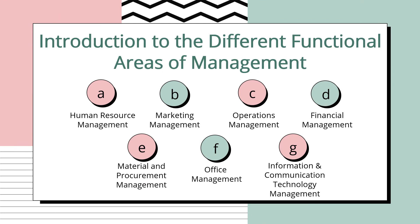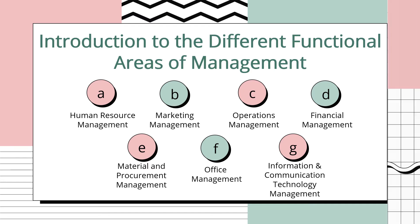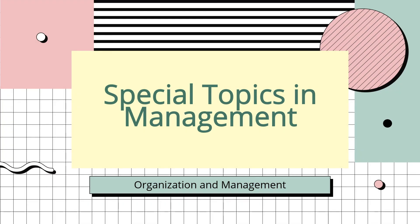Before we close Chapter 8, here are the different functional areas of management: human resource, marketing, operations, financial management, material and procurement, office management, and information and communication technology management. That concludes Chapter 8, and we have now finished all 8 chapters under Organization and Management.